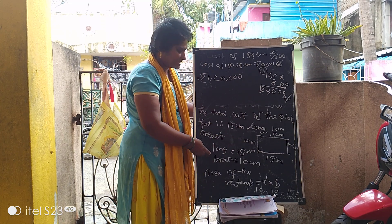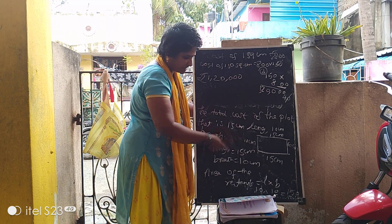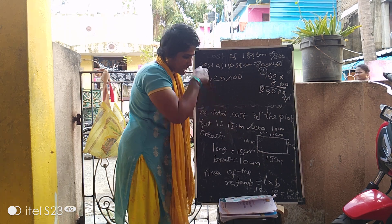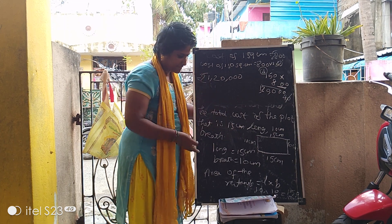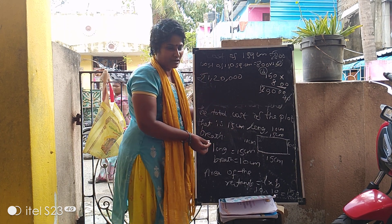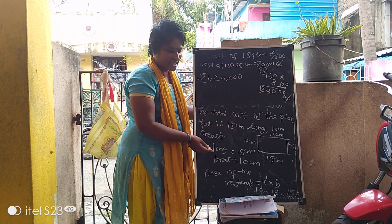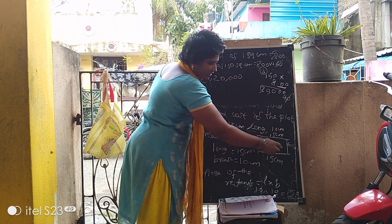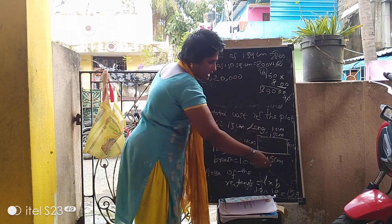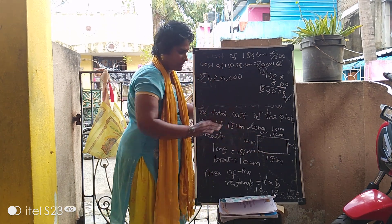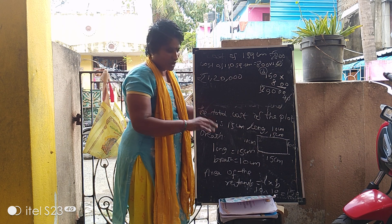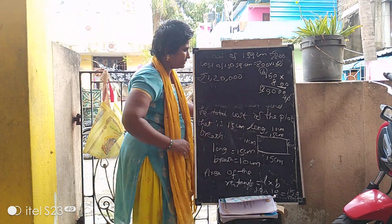L into B: length is 15 cm, breadth is 10 cm. 15 into 10 equals 150 square centimeters. That is the area of the rectangle.